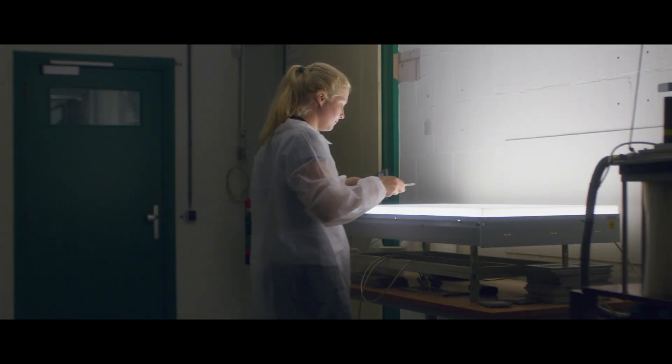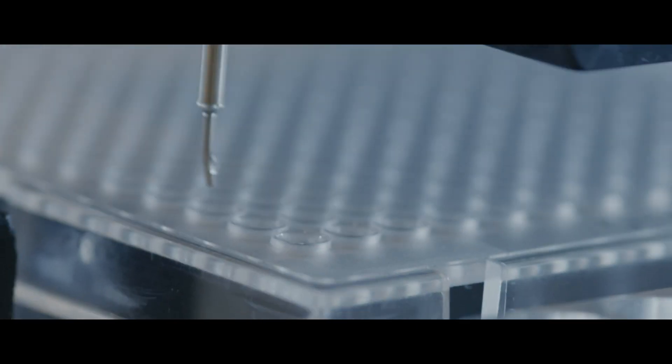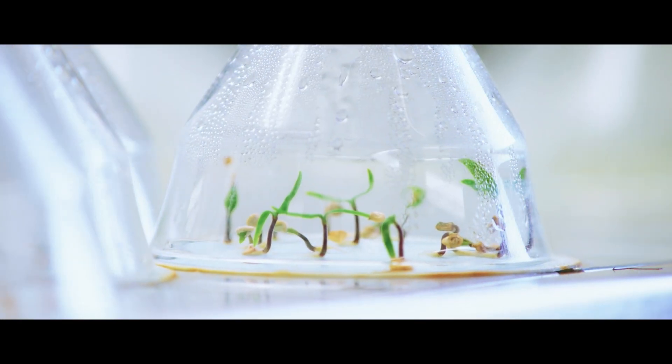In the past, we had to wait until a bell pepper was fully grown to see whether it was going to be a yellow or a green one. Now we can see that at a very early stage, in the DNA of a seedling.